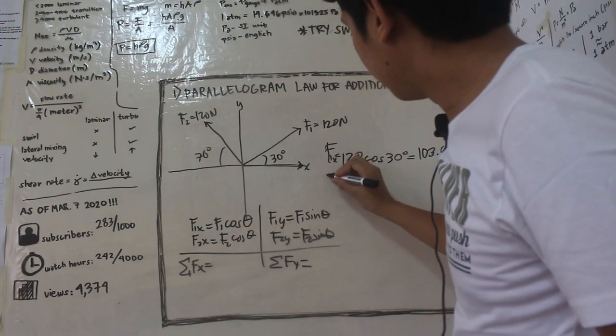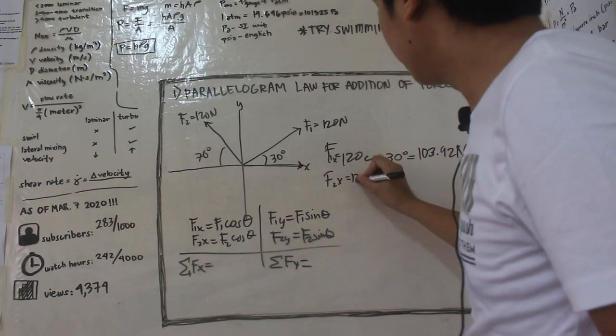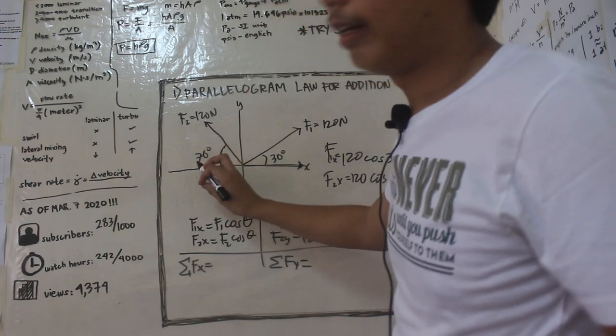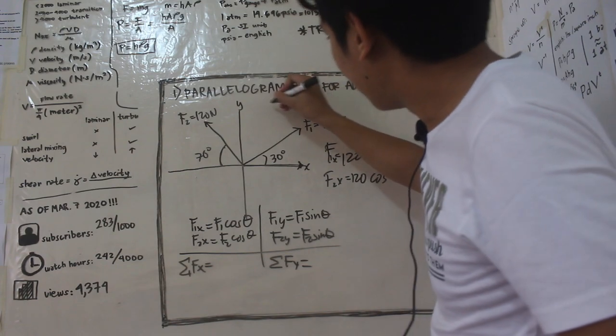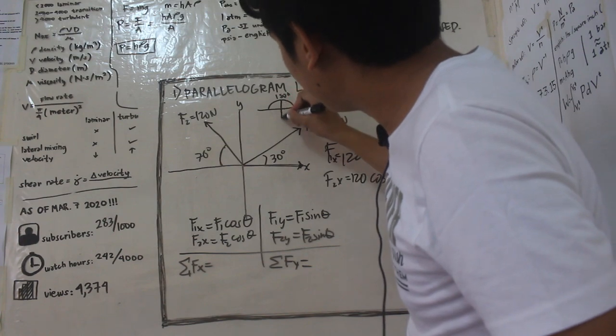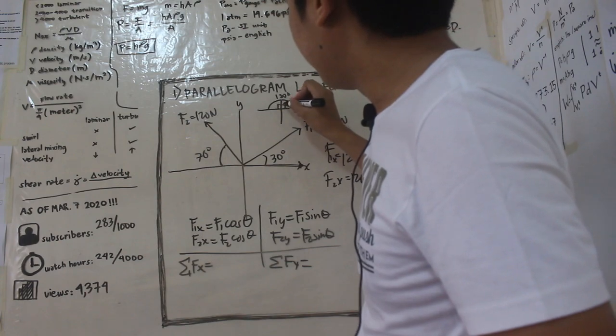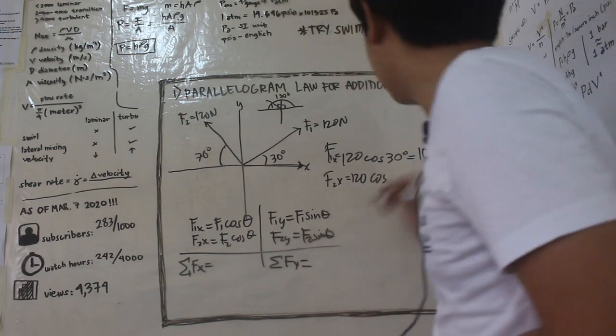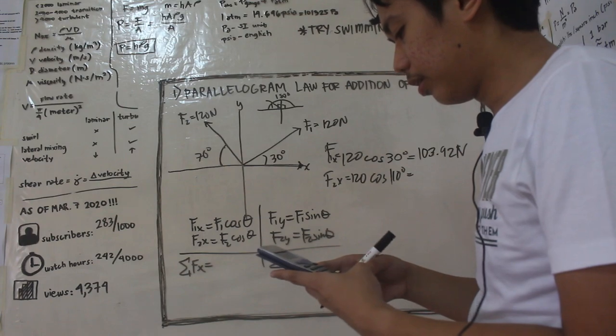Tapos ang sa f2 of x is equal to f2, 120 cosine. Take note na hindi itong 70 degrees, ito lang ay our base. Since half sya ng circle diba, and this one is 180 degrees right? Tapos dito, so this one is a right angle, right? So 90, 90. So 180 minus 70, ilan yan? So it's 110.